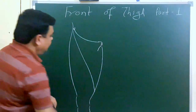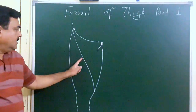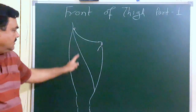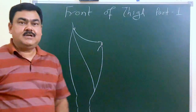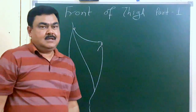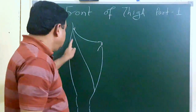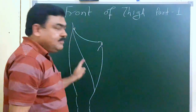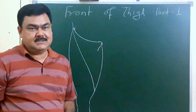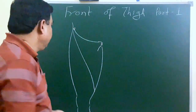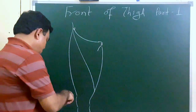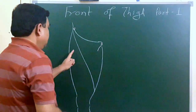Here is the position of the sartorius. This line is formed by the sartorius muscle.